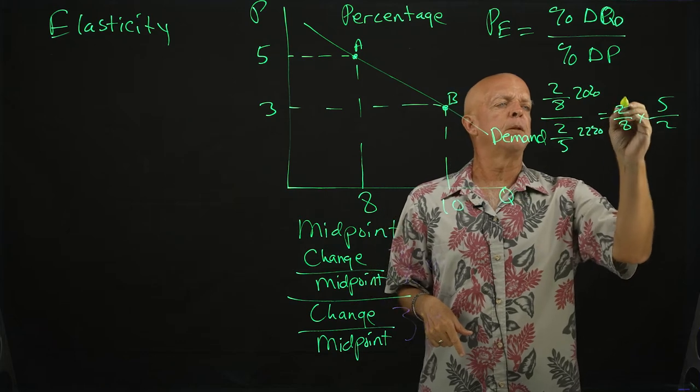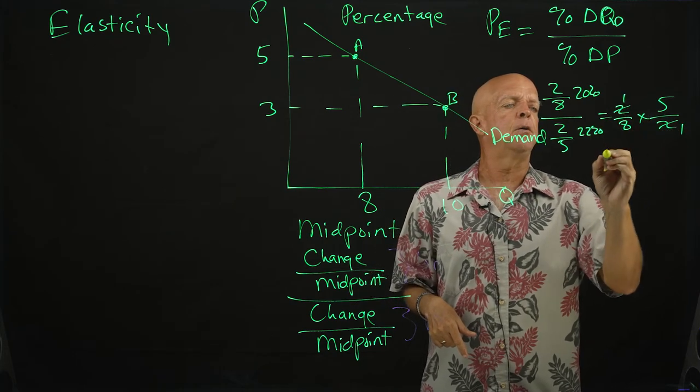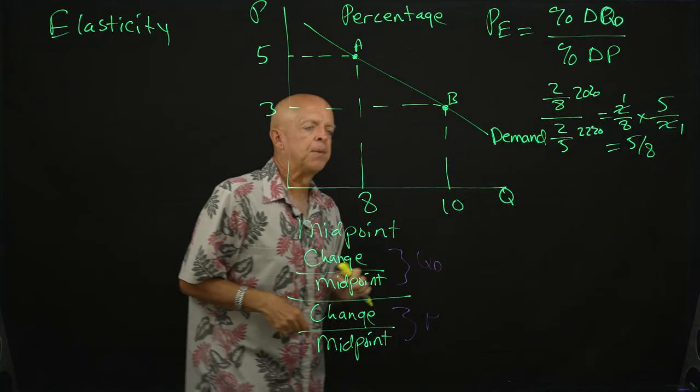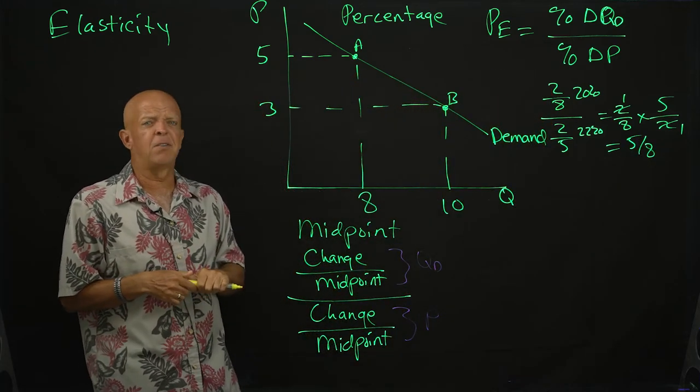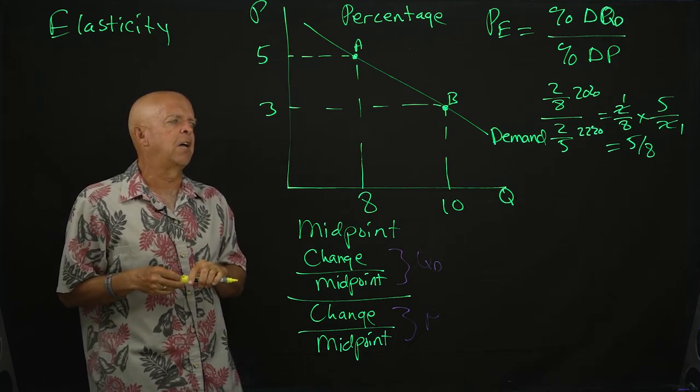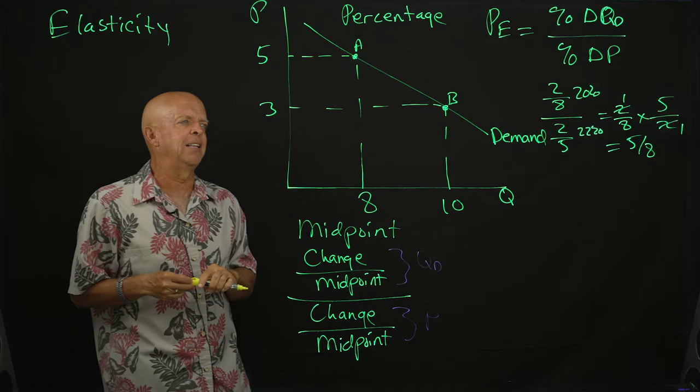And this becomes five eighths. And when you have five eighths like that, as you'll learn later, this five eighths is actually below one and it's inelastic.